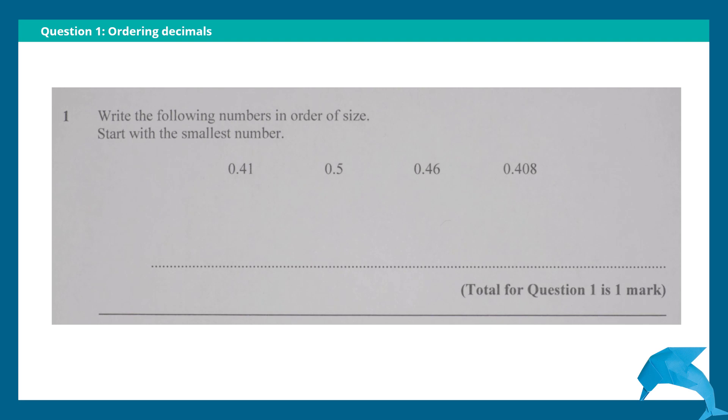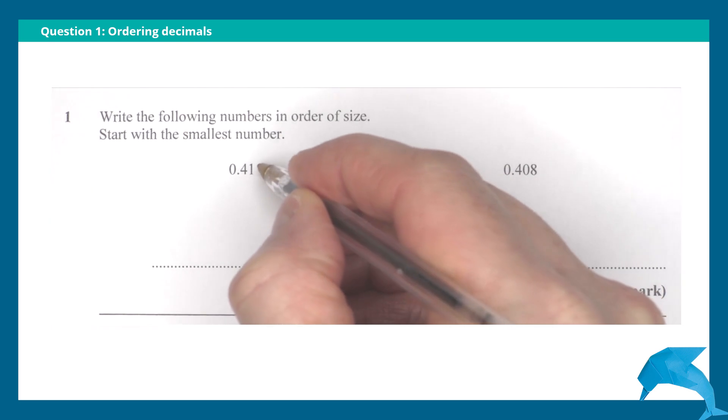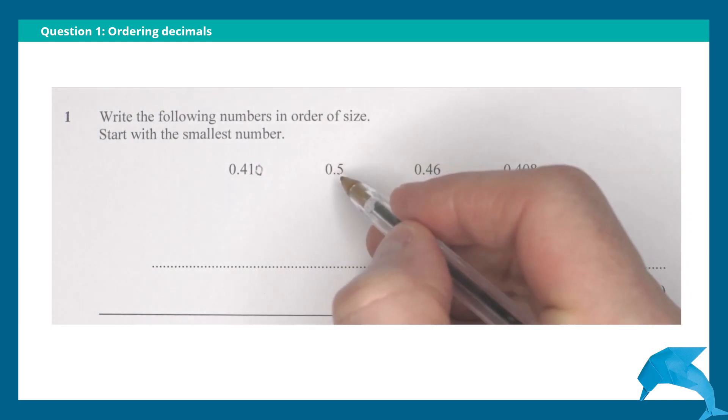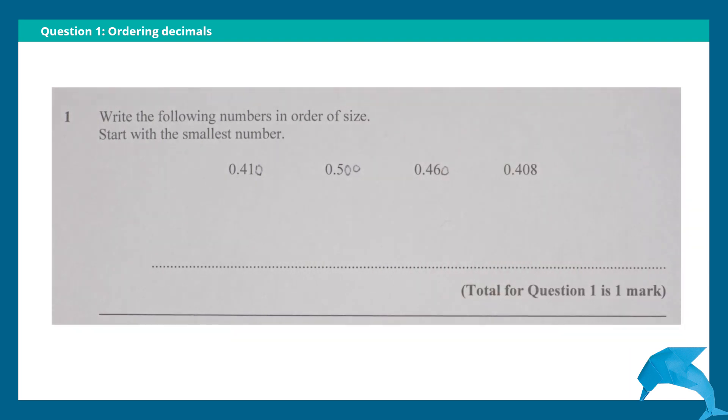One, two, and then a zero, so three digits. Adding two zeros here, one zero here. And now we can compare the values after the decimal points: 410, 500, 460, 408.